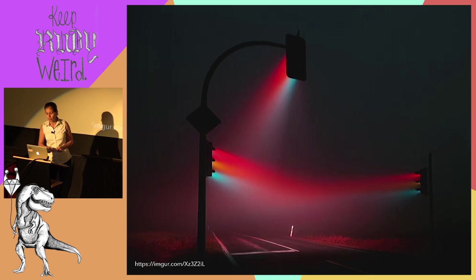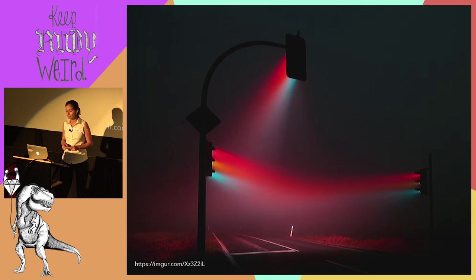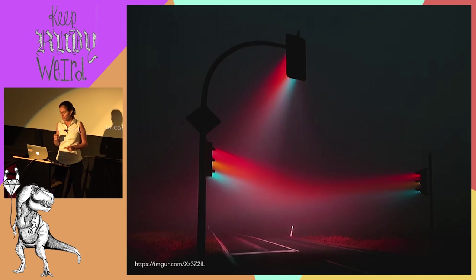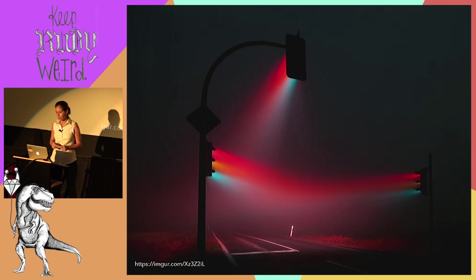Not all algorithms are used online. One non-web example we see all the time is traffic control. It's estimated that an intelligent traffic control system can save billions of dollars every year by reducing idling time at traffic lights. Traffic control systems are based on dynamic programming algorithms that consider the time needed for a car to travel between a string of lights until it gets to its destination — what we usually call the green wave.